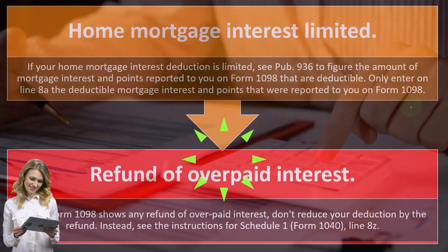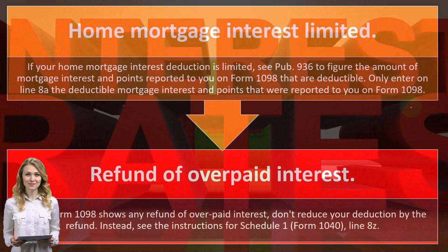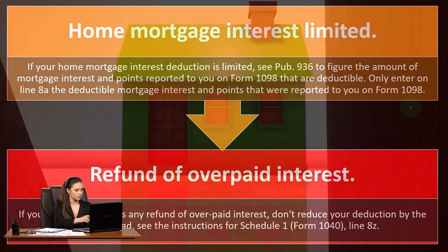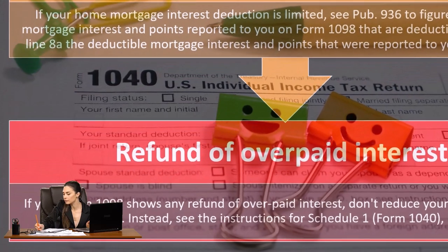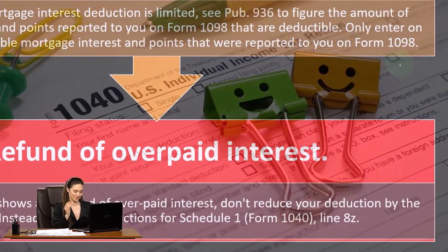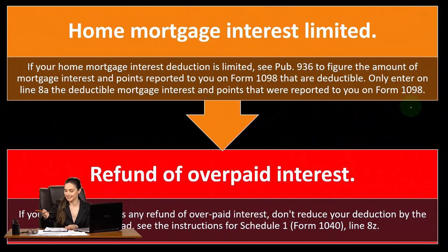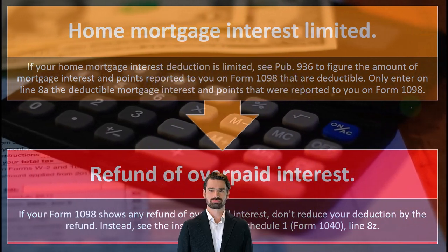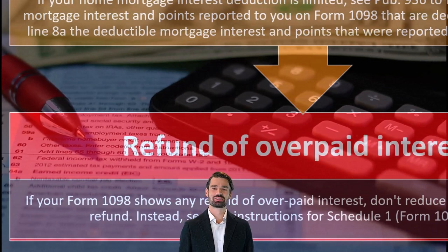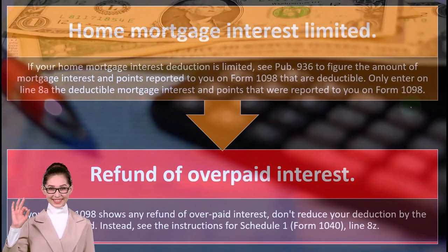Regarding refund or overpaid interest: if your Form 1098 shows any refund or overpaid interest, don't reduce your deduction by that refund. Instead, see the instructions for Schedule 1, Form 1040, Line 8Z. This is similar to the state income tax situation — if you deducted state income tax in the prior year and then got a refund, you don't amend the prior year return; you just record it as income in the current year. Similarly here, if you deducted interest in a prior year and it was later refunded, include it as income in the current year.